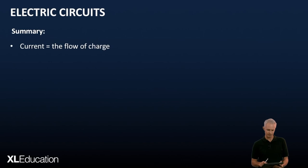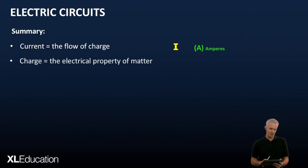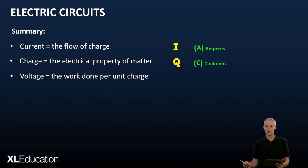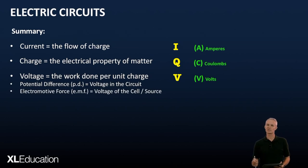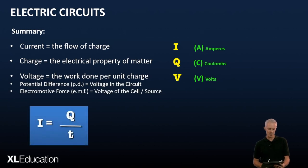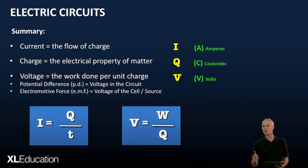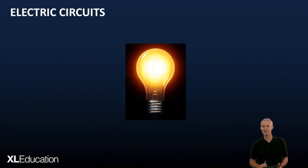Now quick recap, summary of things. Current is the flow of charge, which is given by the letter I, intensity of current, and the unit amperes or amps. Charge is the electrical property of matter which comes in little bits, quantities, which is where the letter Q comes from, and it's given by the unit C for coulombs. And then lastly, voltage is the work done per unit charge, or the energy given to each charge, and that is the letter V and the unit V for volts. The two other phrases of voltage that we need to know are PD, which is potential difference, which is the voltage in the circuit, and EMF, the electromotive force, which is the voltage of the cell or the source. And then lastly, the two equations that we come across: I equals Q over T—current is the amount of charge per unit second—and V equals W over Q—voltage is the work done per unit charge. I hope you have found this enlightening.